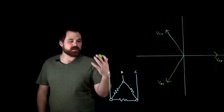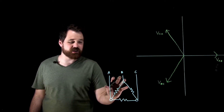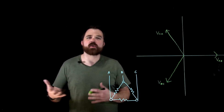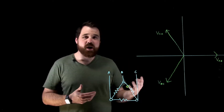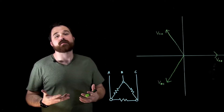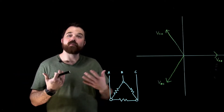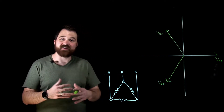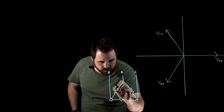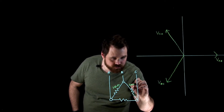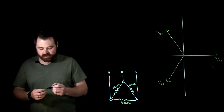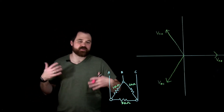Welcome to this video. We are discussing an unbalanced delta-connected load. To be unbalanced, you need a different power factor, different impedance, or both. In this case, all resistors have the same power factor of one, but each has a different ohmic value: between A and B we have 10 ohms, between B and C we have 20 ohms, and between C and A we have 30 ohms.